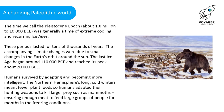A changing Paleolithic world. The time we call the Pleistocene epoch, about 1.8 million to 10,000 BCE, was generally a time of extreme cooling and recurring ice ages, lasting tens of thousands of years. The accompanying climate changes were due to small changes in the Earth's orbit around the sun. The last ice age began around 110,000 BCE and reached its peak about 20,000 BCE. Humans survived by adapting and becoming more intelligent. The Northern Hemisphere's long, cold winters meant fewer plant foods, so humans adapted their hunting weapons to kill larger prey such as mammoths, ensuring enough meat for large groups for months in freezing conditions.